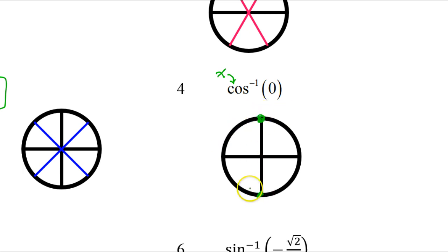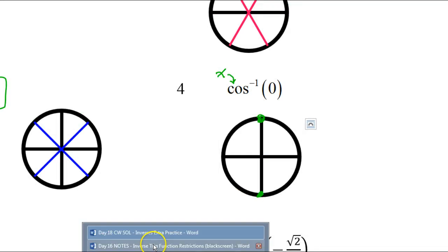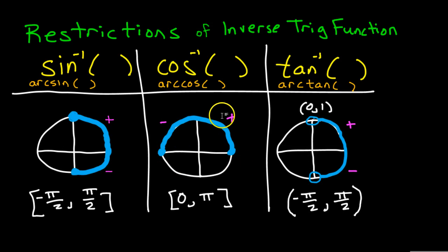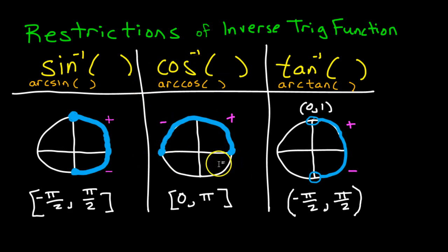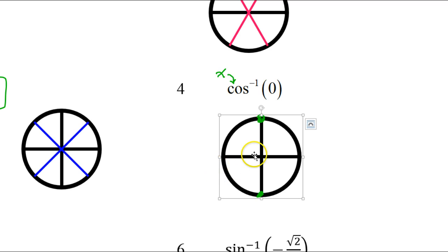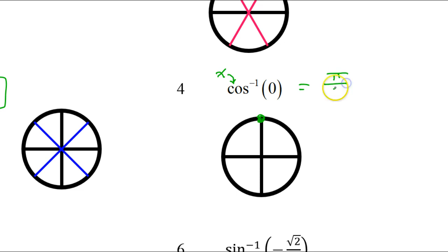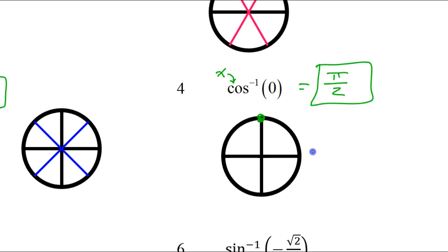Here and here — these are the two places with an x value of 0 on the y axis. However, inverse cosine is only defined in the top half of the circle, so we've got those restrictions. We can forget about the bottom one. This is the only answer, and that is pi over 2. So the answer to number 4 is pi over 2.